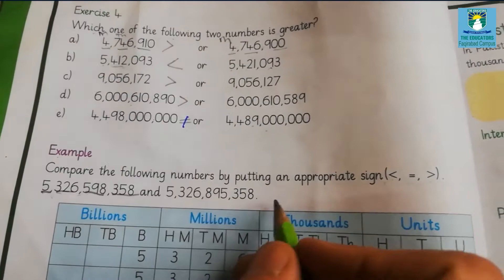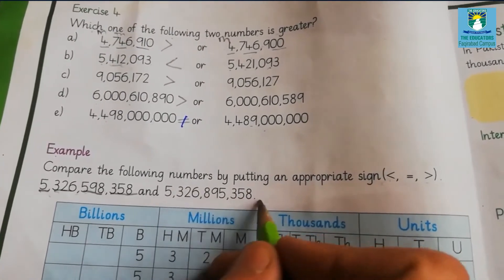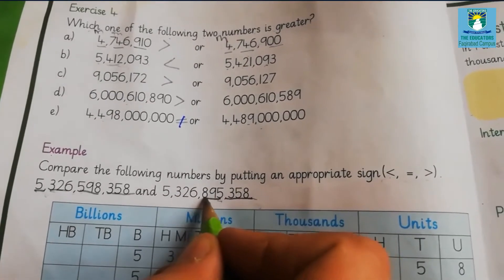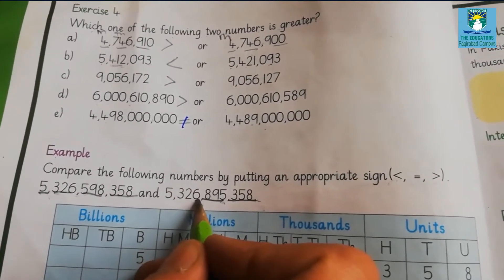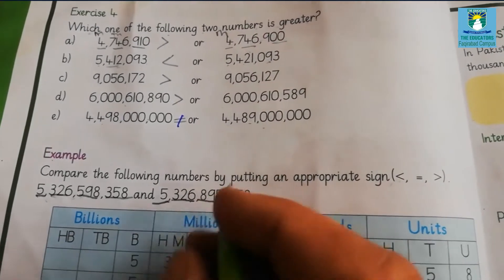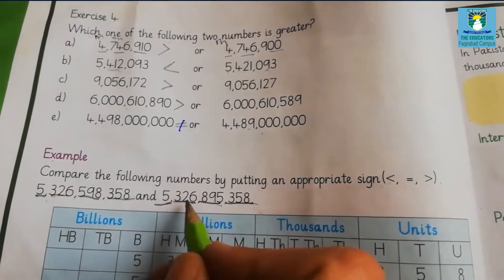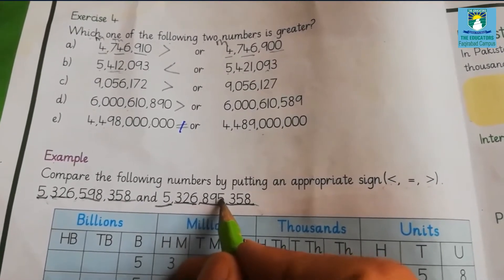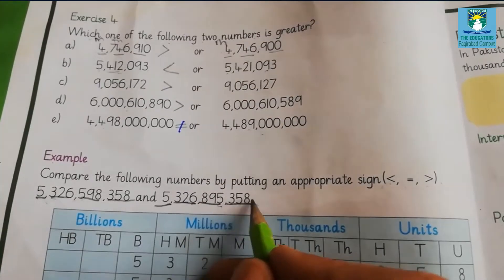For the second value, again we will write the periods: first the units period, then thousands period, then millions period, and the last one is the billions period. So the second value is 5,326,895,358.